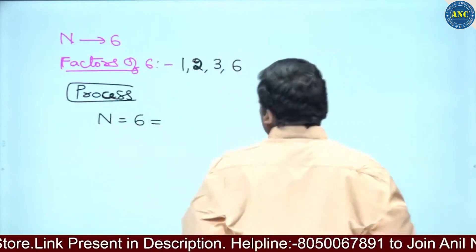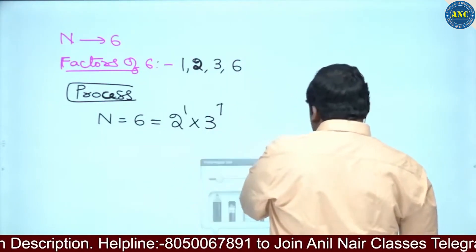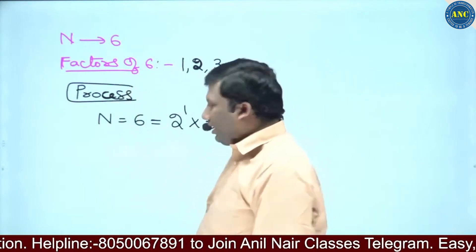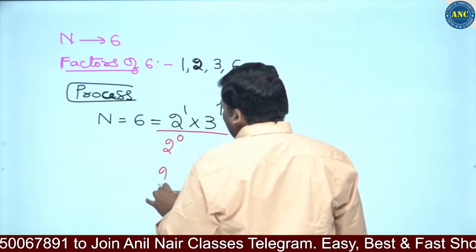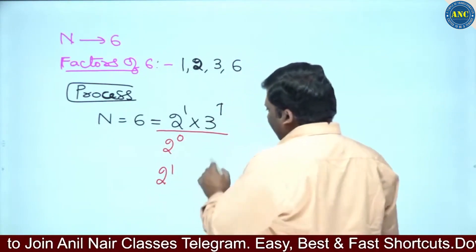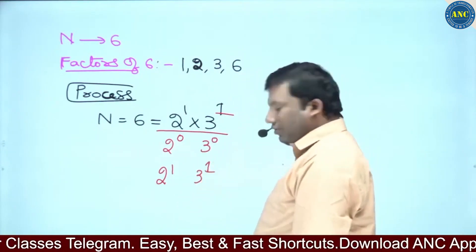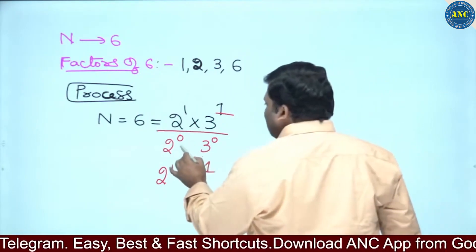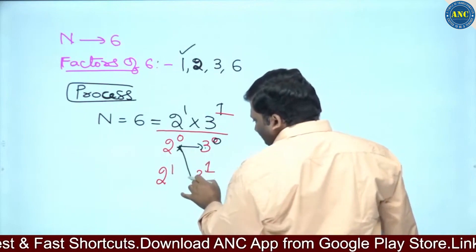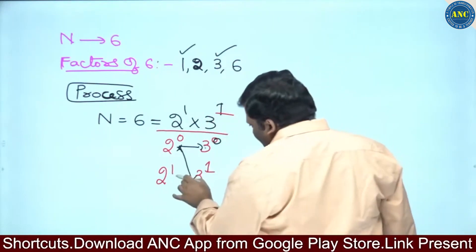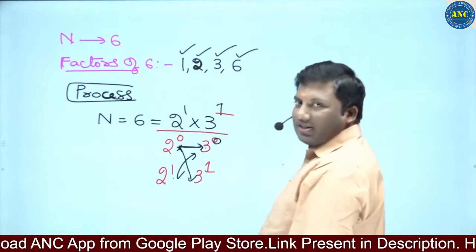Step number 1: write the number as a power of prime basis. 6 can be written as 2¹ × 3¹. I am writing the factors starting from power 0, since 1 is 2 power 0. So write all powers of 2 from 0 to 1, and all powers of 3 from 0 to 1. Now, 2⁰ × 3⁰ = 1×1 = 1, which is a factor. 2⁰ × 3¹ = 1×3 = 3, a factor. 2¹ × 3⁰ = 2×1 = 2, a factor. 2¹ × 3¹ = 2×3 = 6, a factor.